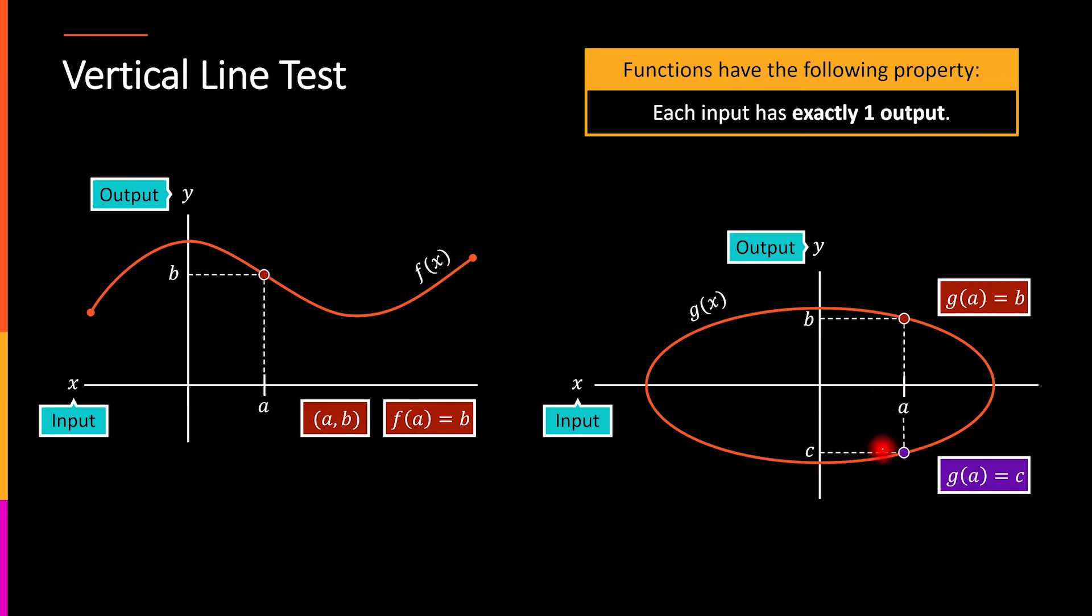But the x value is the same. So if I went up from a, I'd get 1, and if I went down from a, I'd get negative 1. That means that for that one input, that a value, I'm going to get two different outputs, the b or the c value, depending on which direction I go. So this would be an example of the graph of a curve that is not a function.